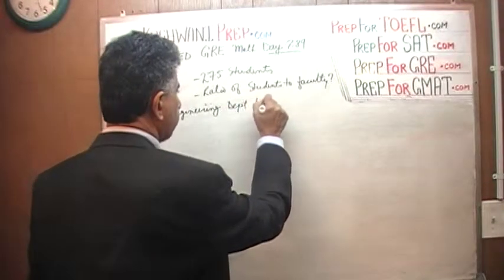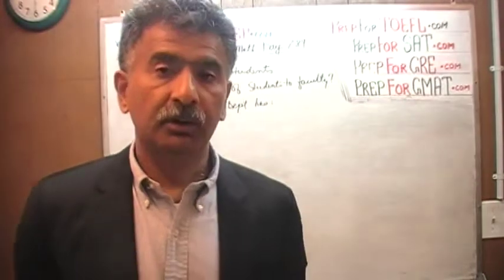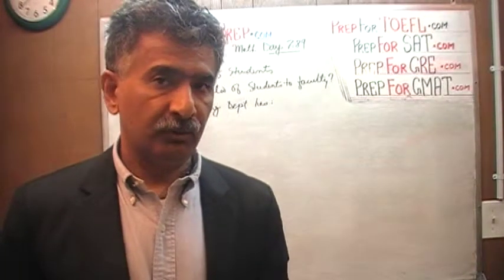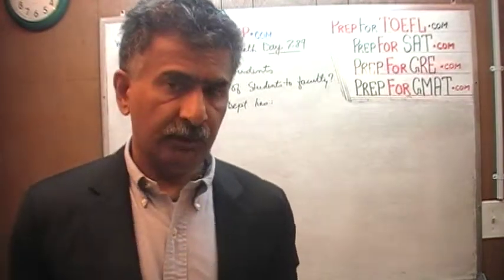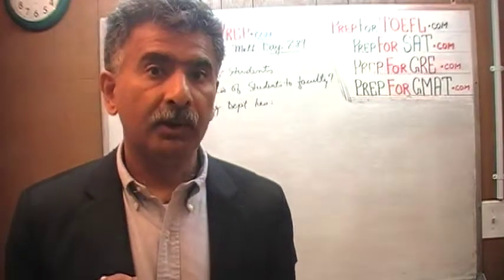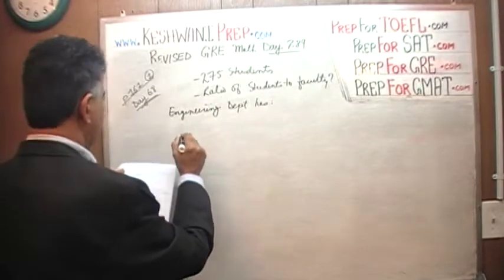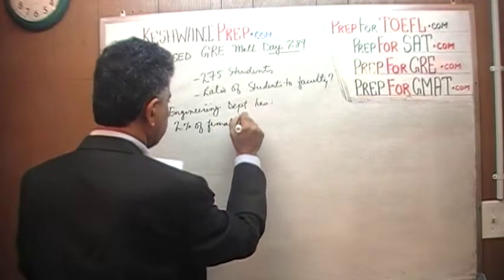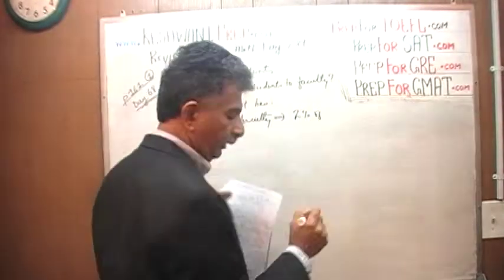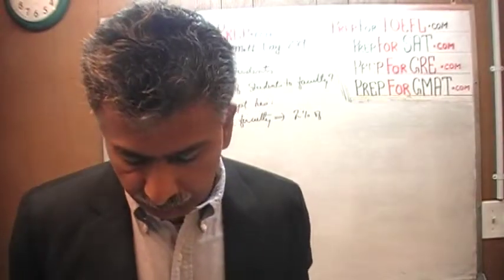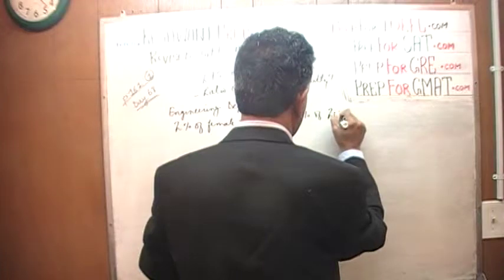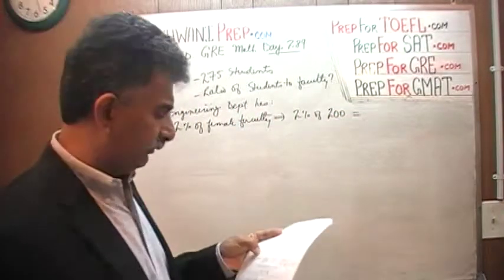Looking at the engineering department in the bar graph, in order to figure out the ratio of students to teachers, we already know how many students there are — we just have to figure out how many faculty there are. The chart tells us that 2% of all female faculty are employed by the engineering department. There are 200 female faculty total, so 2% of 200 is 4. Very straightforward.